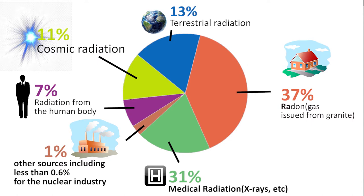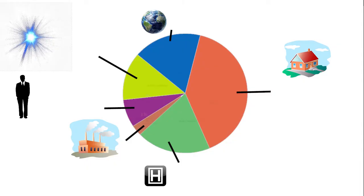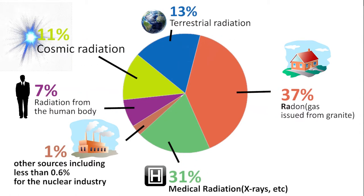Now let's look at the different sources of radiation in the world. 37% of radiation comes from radon gas, a by-product of granite material — wherever you have granite it emits a radioactive gas. 13% comes from terrestrial radiation present in the earth and atmosphere. 11% comes from cosmic radiation from outside the atmosphere, such as from the solar system.